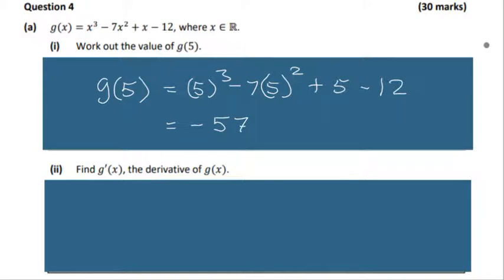Let's go on to g dash of x. Remember how to differentiate — maybe do it in two steps. Bring down the power first, so we get n by x to the power of n minus 1. Let's do that for all the terms.